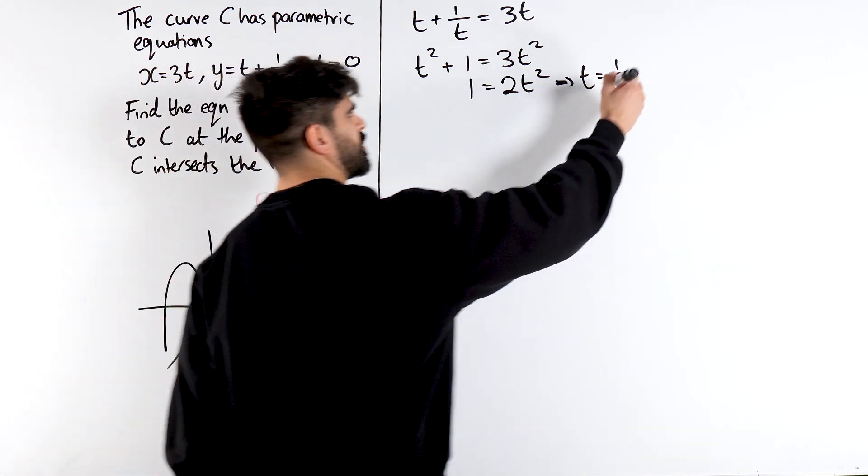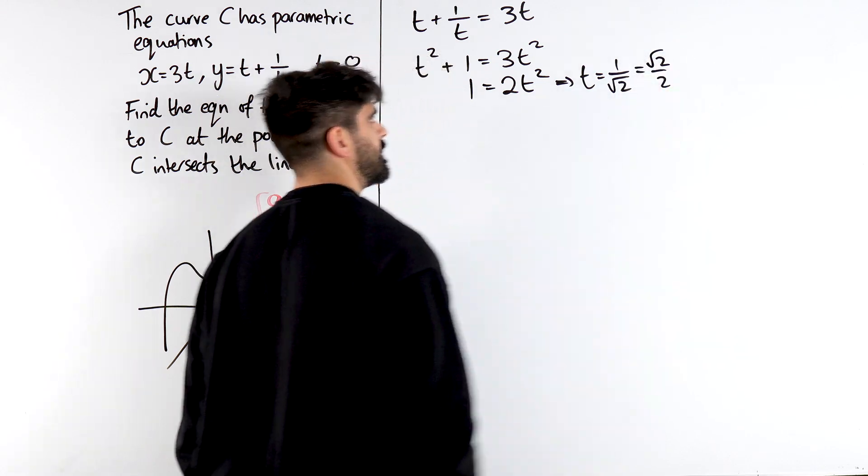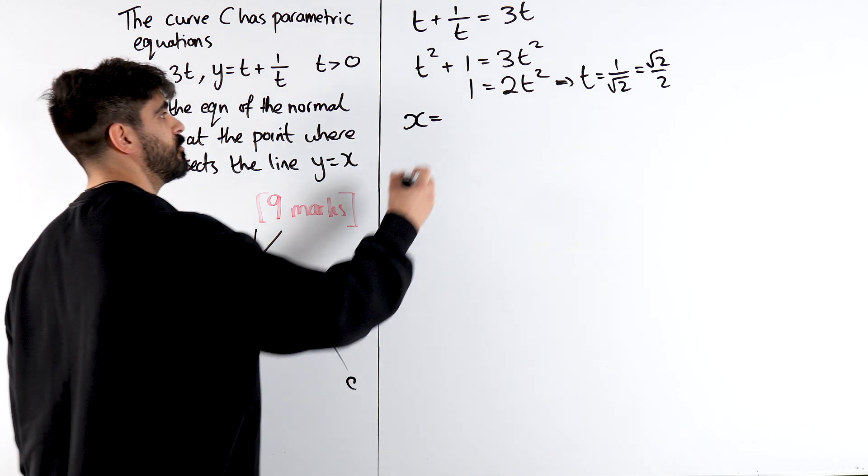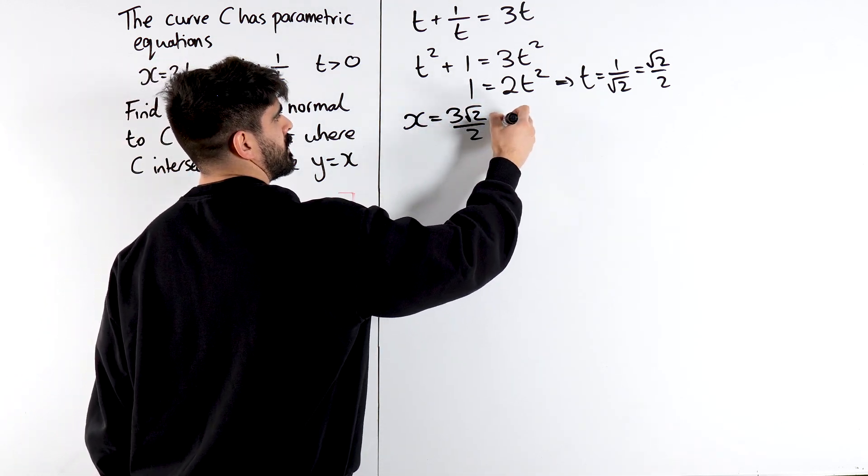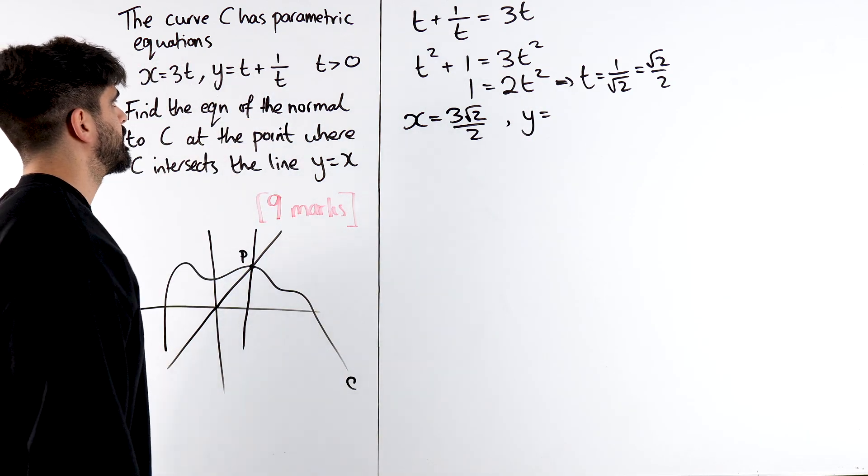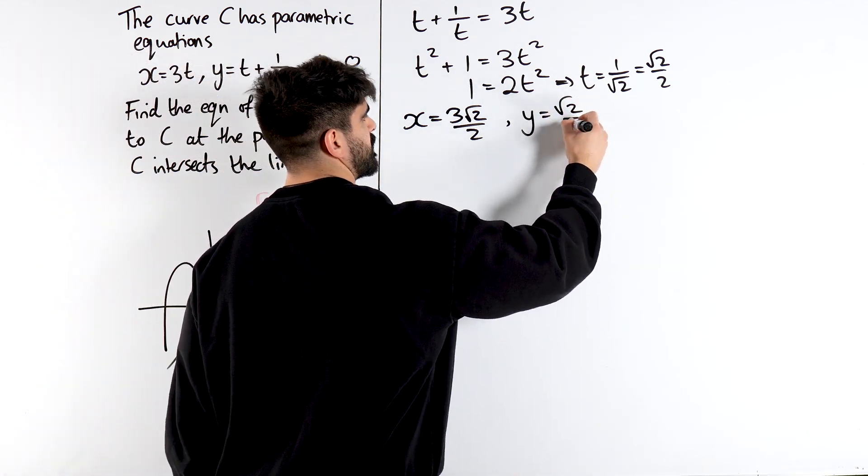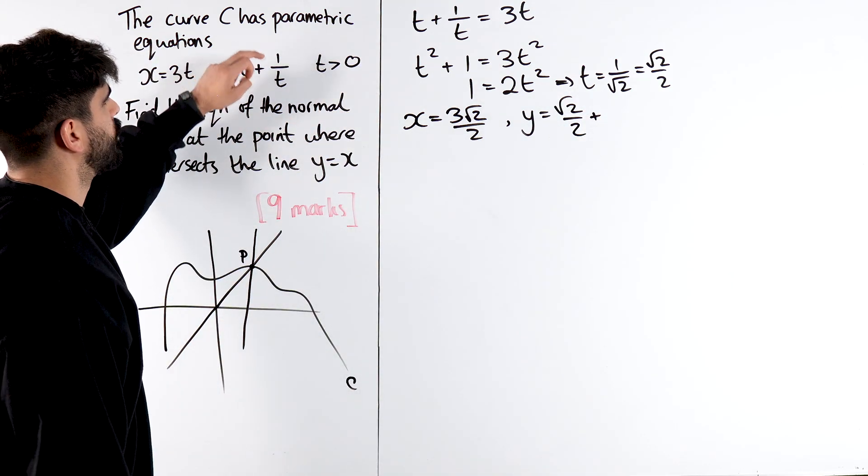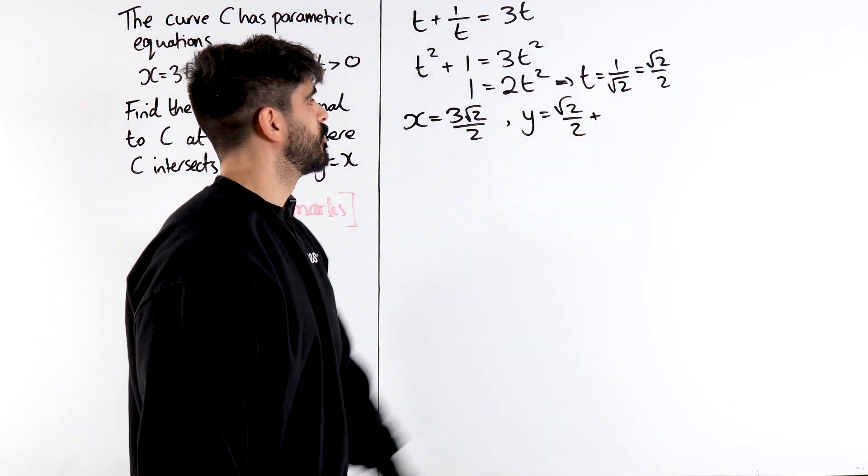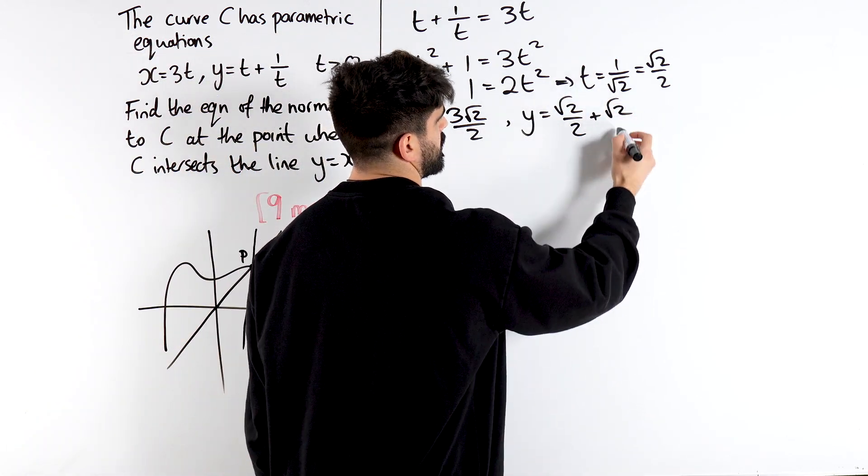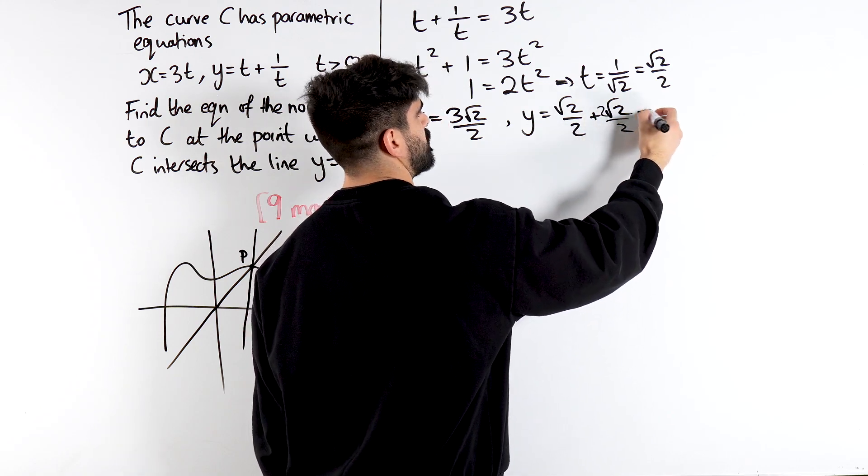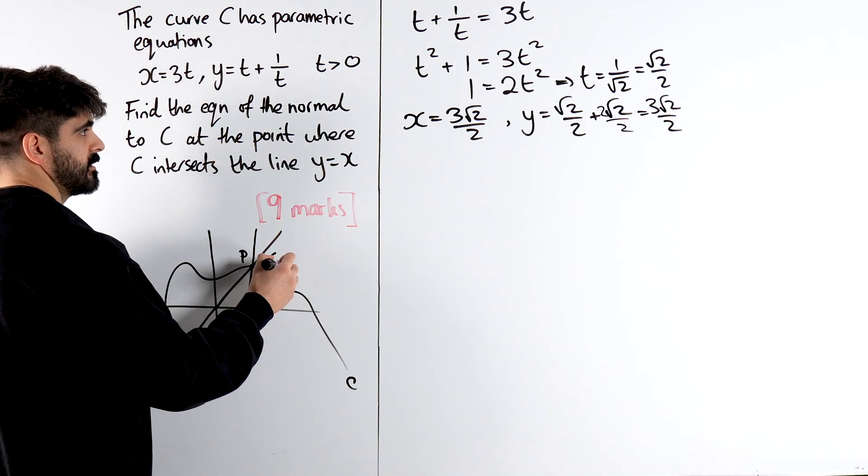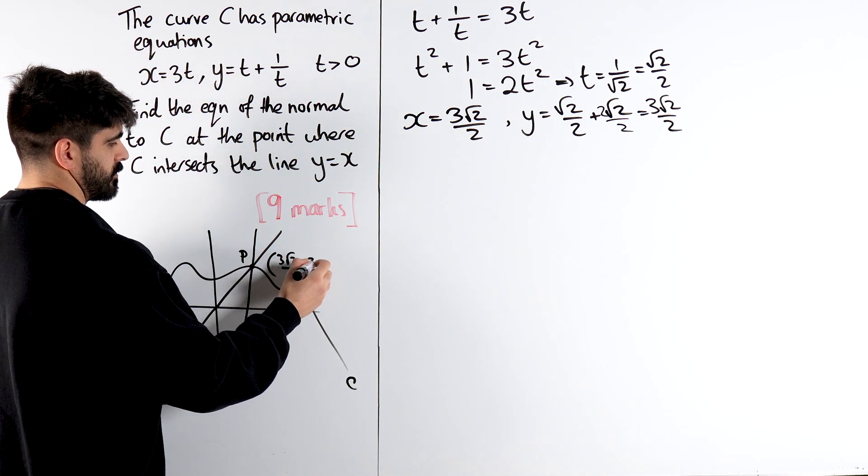So x, I could treat this as root 2 over 2, it's probably easier to work with. So x, it's going to be 3 lots of that, 3 root 2 over 2, and y is t, which is root 2 over 2. Obviously you can use your calculator for this. I guess I'm demonstrating that you don't even need a calculator for most of this stuff. Plus 1 over t, where if t is 1 over root 2, when you reciprocate that you get root 2, that's over 1, so 2 root 2 over 2. When you add them, you get 3 root 2 over 2. So they're the exact same coordinate.